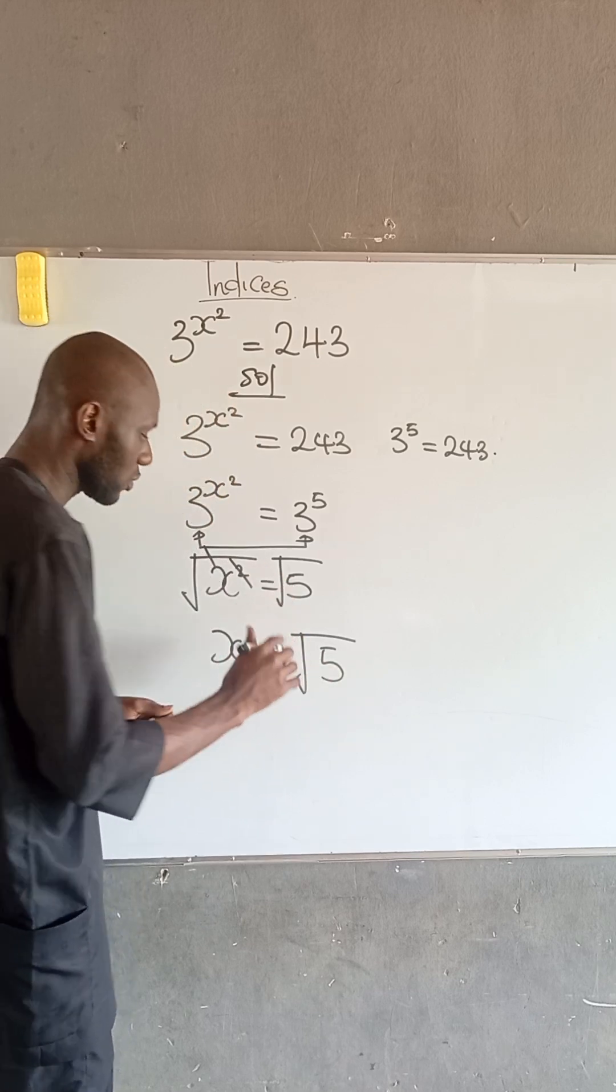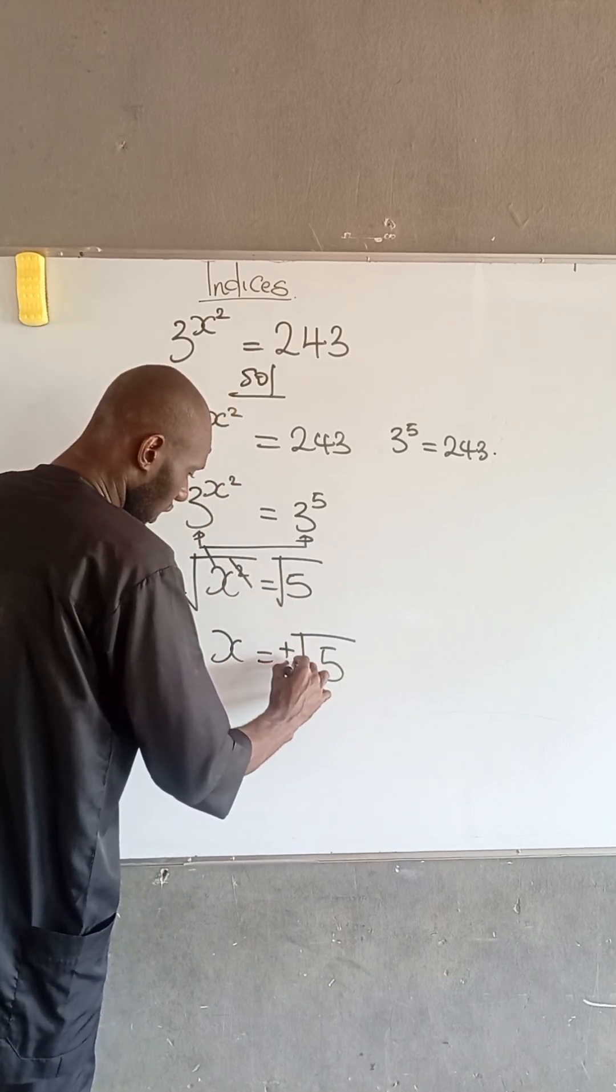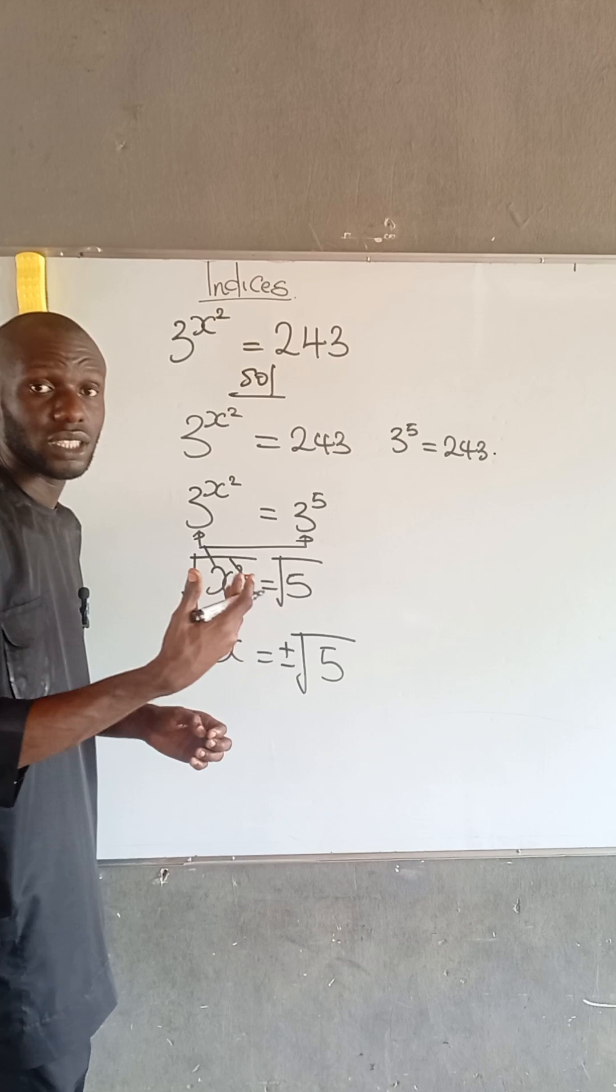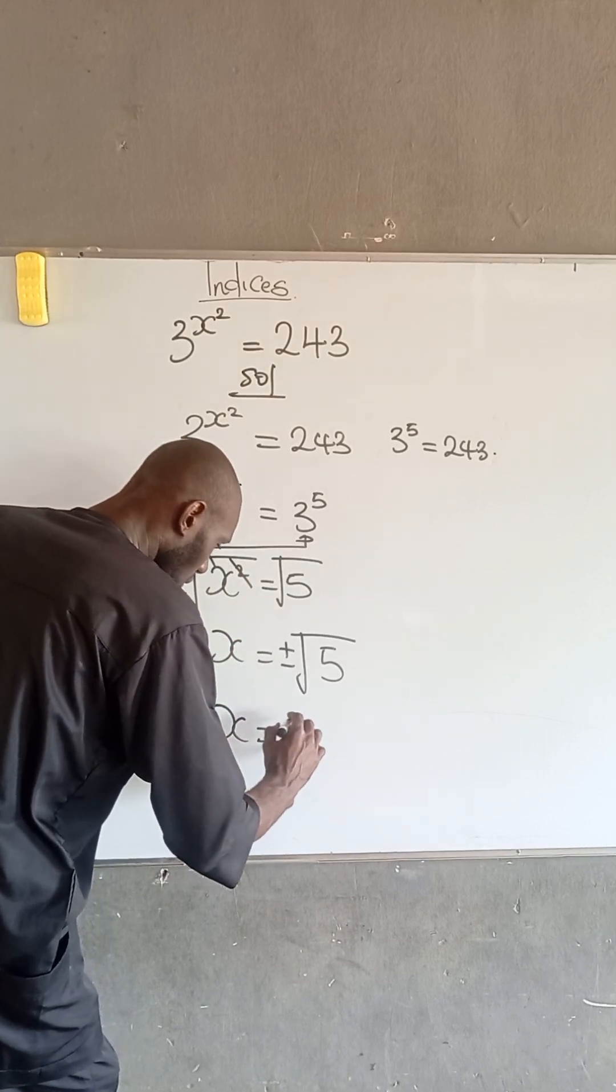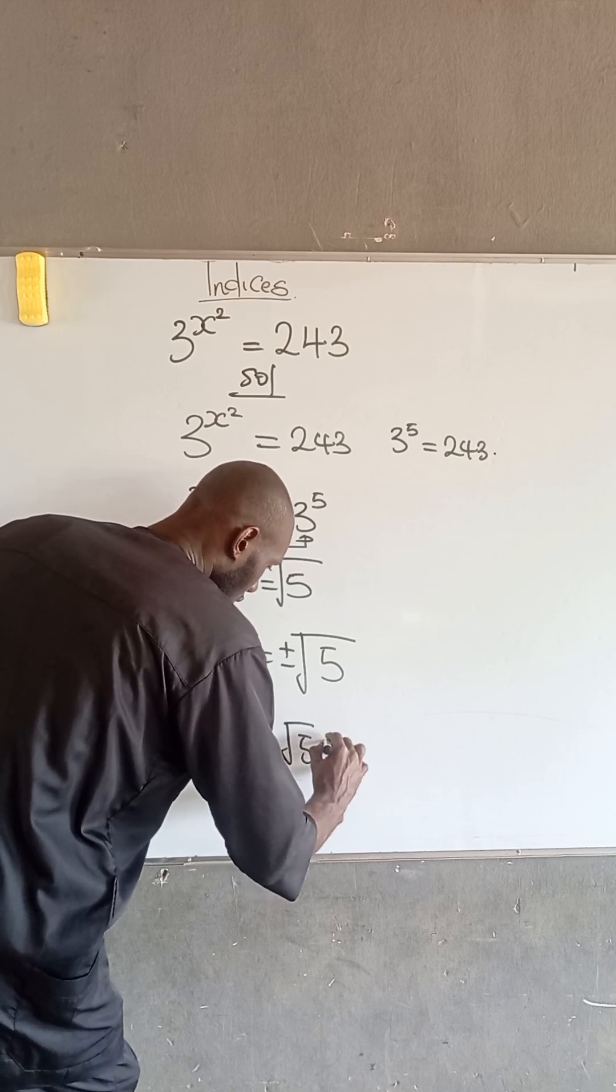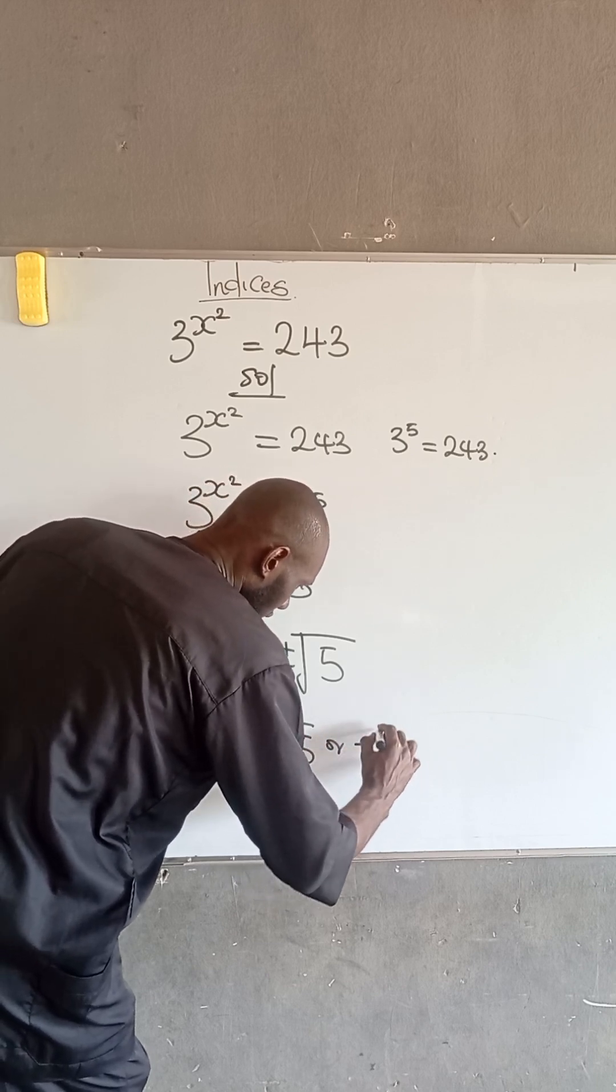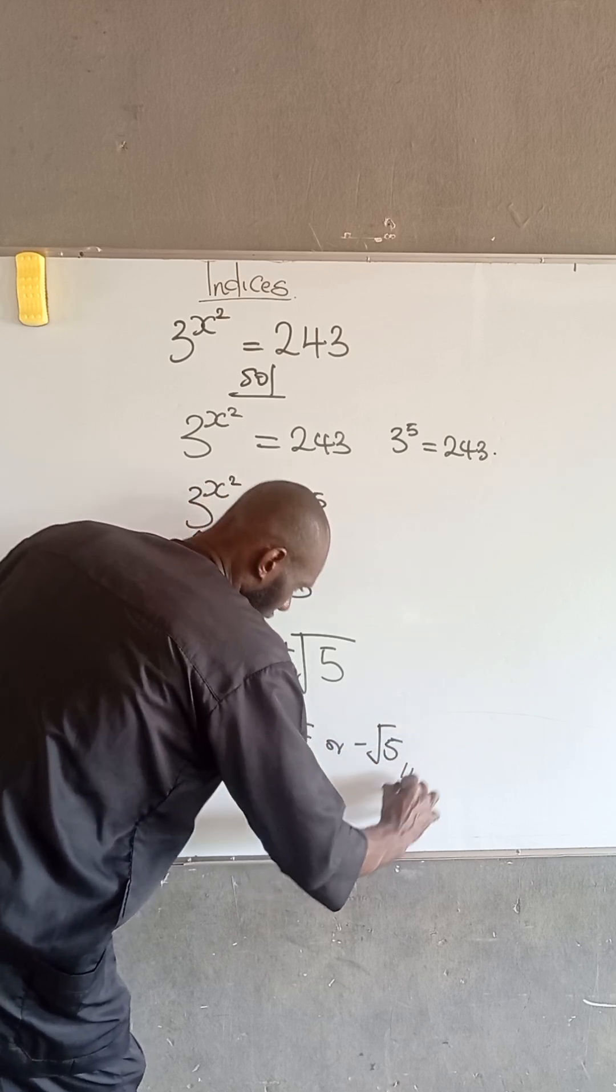And please, you must put plus or minus because you are taking the root of both sides. So, therefore, x is equal to root 5 or x is equal to minus root 5.